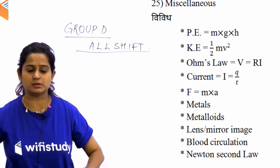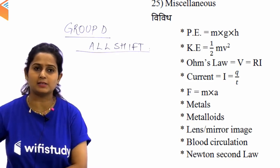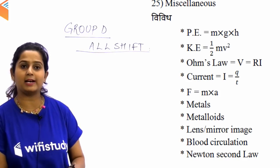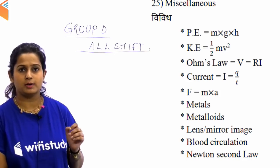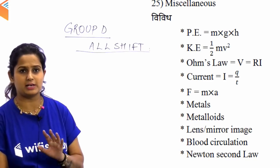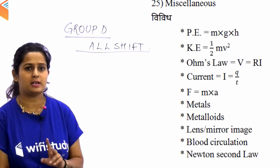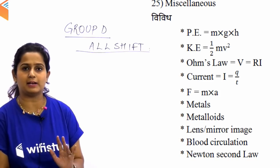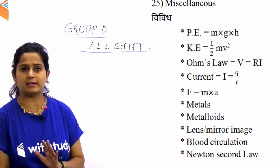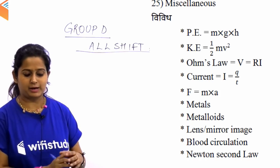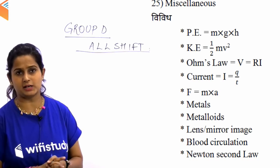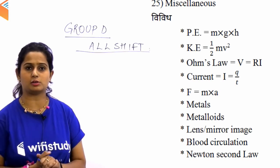Force की जो formula होती है — mass × acceleration — एक question इस पर. और उसके अलावा metal, metalloid, lens और mirror की image जो आज पहली बार आई है यह question. Blood circulation — रक्त परिसंचरण तंत्र — को लेकर भी question था.